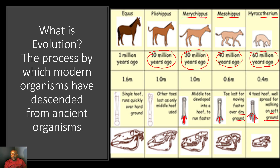At 10 million years ago with the Pliohippus, the other toes are lost and only one middle hoof is used to run faster. Then at 1 million years ago, the Equus has a single hoof and runs quickly over hard ground. Over time, the horse's hoof evolved in response to its environment — from soft ground to dry ground to hard ground — and the head size also grew larger. This is evolution: organisms changing to better survive in their environment.